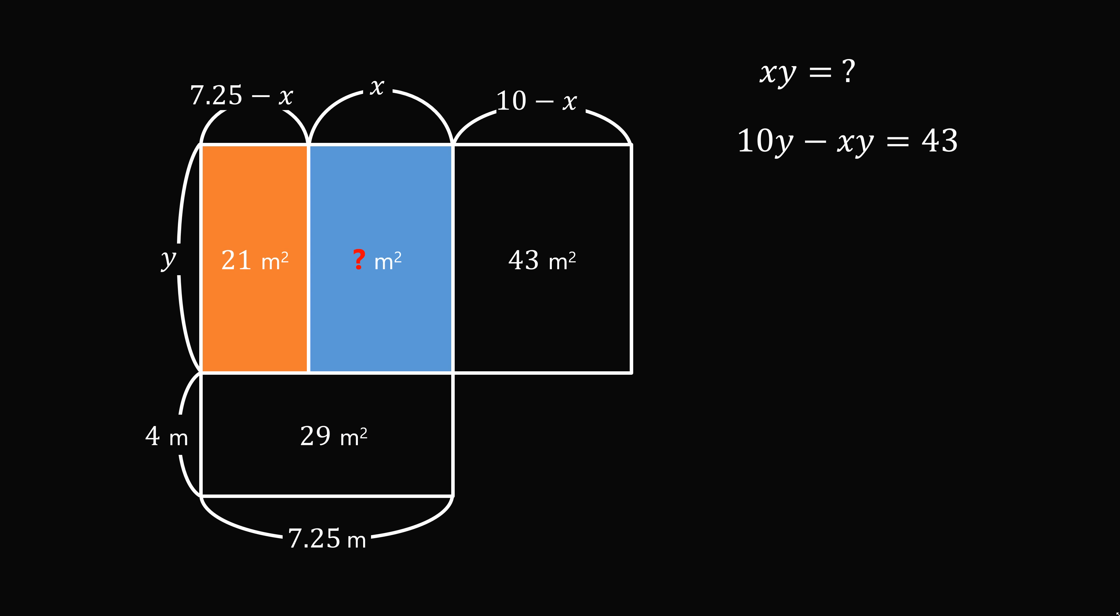Consequently, from the first rectangle, we get the equation 7.25 minus x multiplied by y is equal to 21. This means 7.25y minus xy is equal to 21.